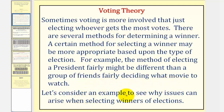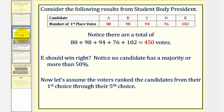Let's consider an example to see why issues can arise when selecting winners of elections. Let's begin by considering the following results from a student body presidential election. Notice how the candidates are listed in the first row from A through E, and the second row tells us the number of first place votes. Notice if we add the second row, this tells us there are a total of 450 votes.